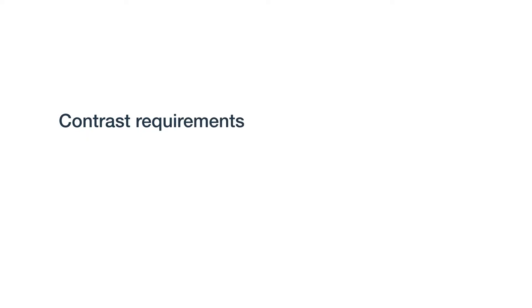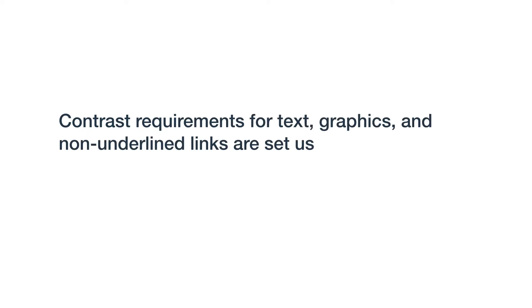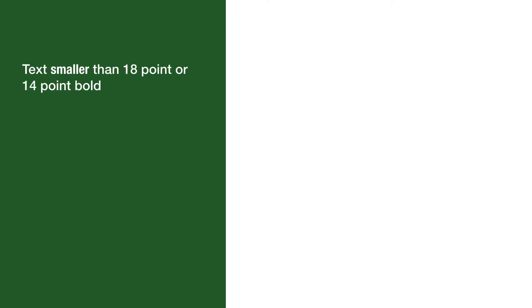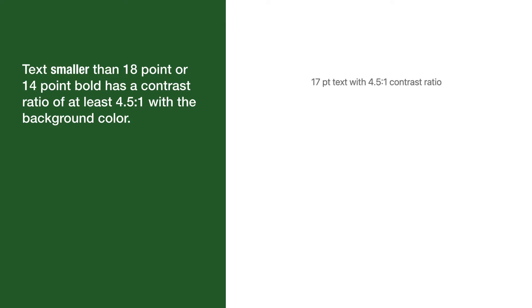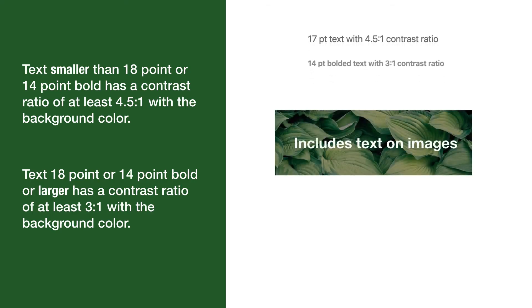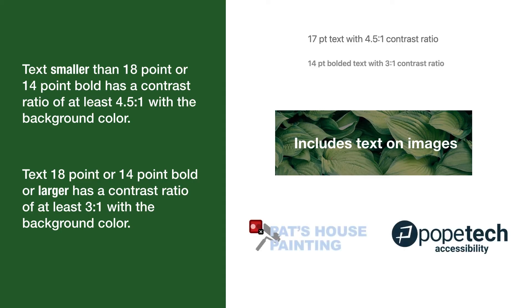Contrast requirements for text, graphics, and non-underlined links are set using contrast ratios. Text smaller than 18 point or 14 point bold has a contrast ratio of at least 4.5 to 1 with the background color. Text 18 point or 14 point bold or larger has a contrast ratio of at least 3 to 1 with the background color. This includes text on images used to navigate or understand the content. WCAG doesn't include logos or brand name text requirements, but it is still worth considering when making branding changes.